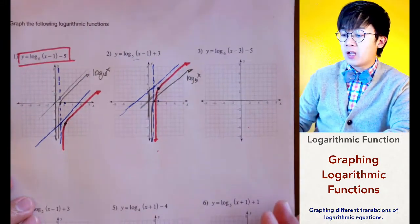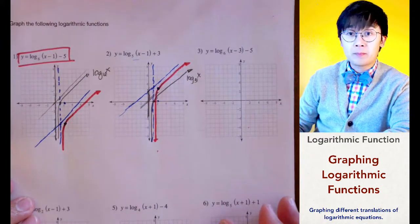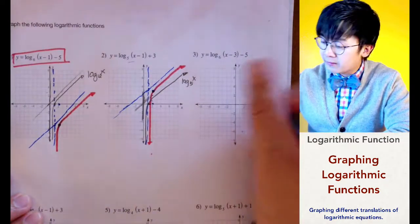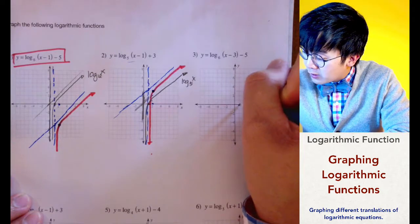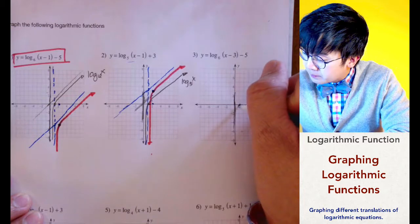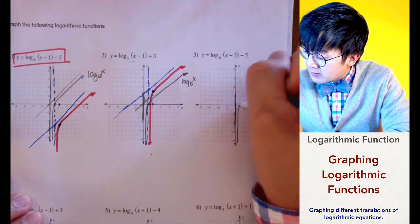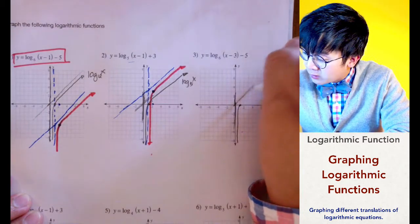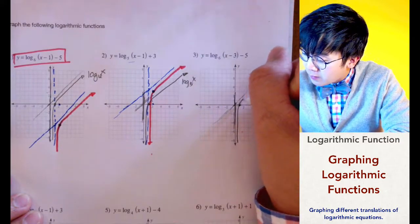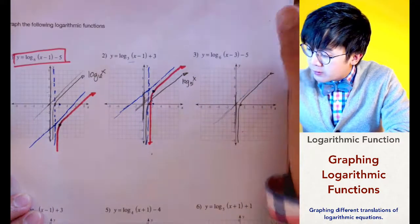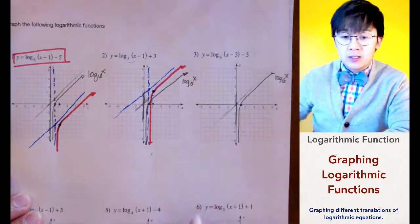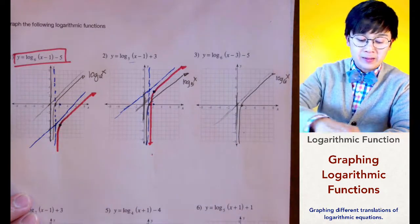That's the graph of log of x minus 1 to the base 5 plus 3. For the third graph, let's go ahead and graph the basic log function with a vertical asymptote at x equals 0 and slant asymptote at y equals x. The base is still not going to affect our basic graph.